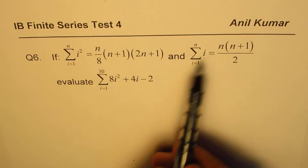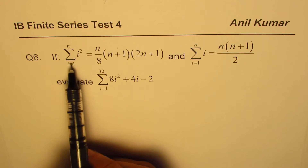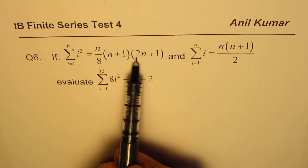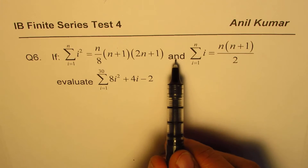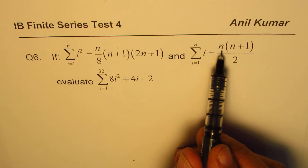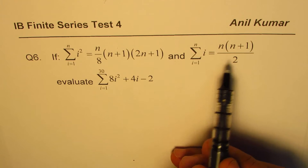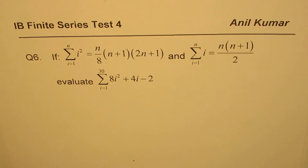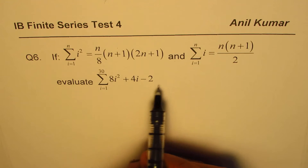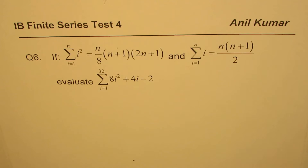The sum of the first n terms of i² is n over 6 times (n+1) times (2n+1), and the sum of the first n terms of i is n times (n+1) divided by 2. These are for all natural numbers. Evaluate the sum of 8i² + 4i − 2.